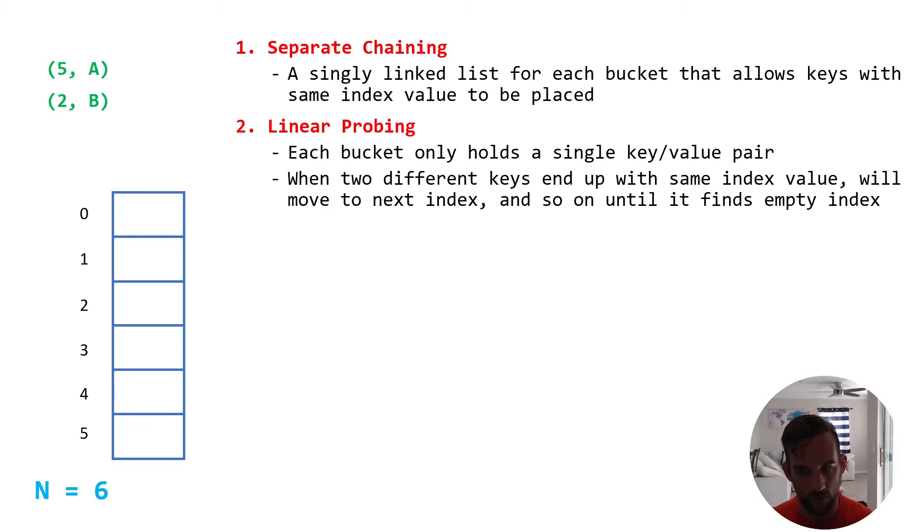So how does that work? So let's take a look. For an example, let's say we have index 1, 2, and 4 filled up with values. And we want to insert 2B. That's the key value pair we want to insert into the hash map.